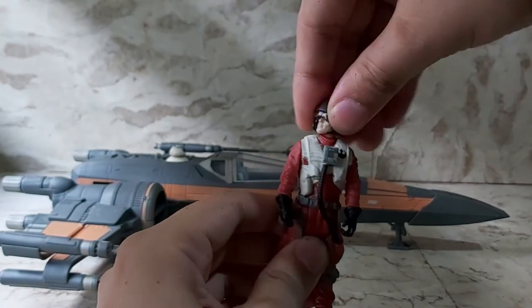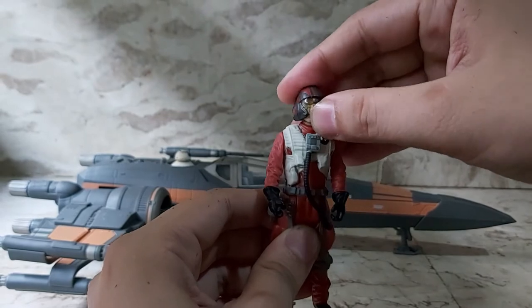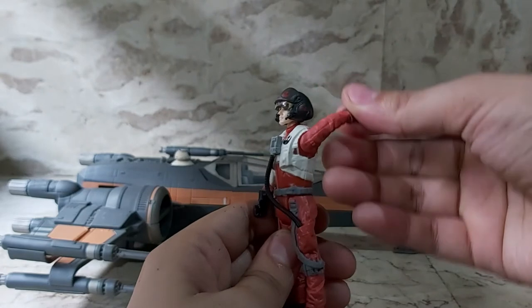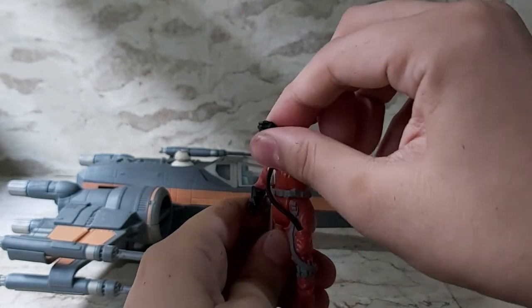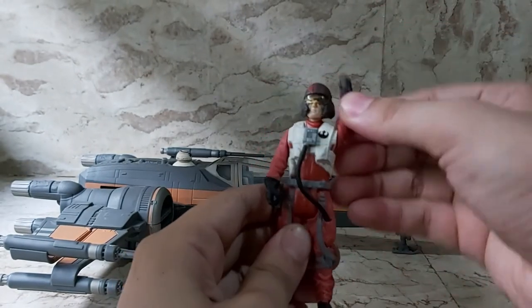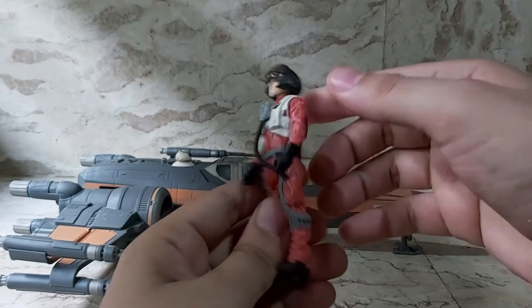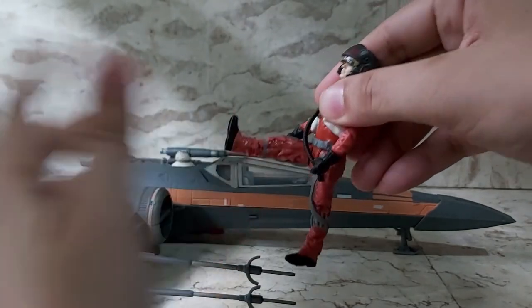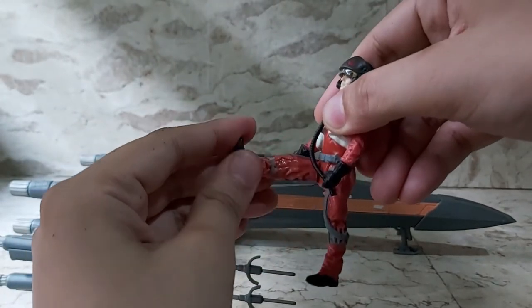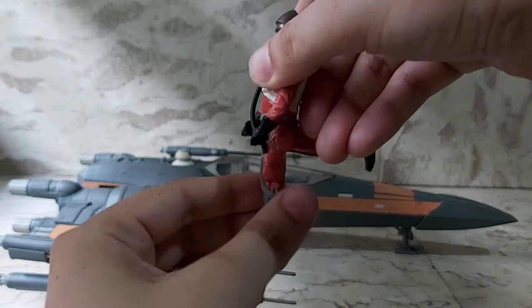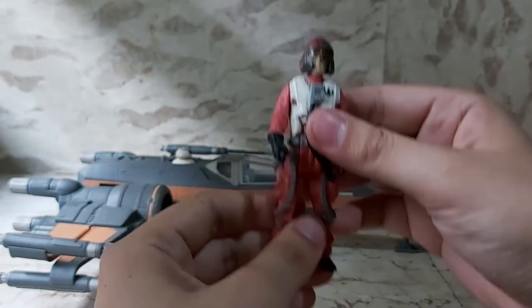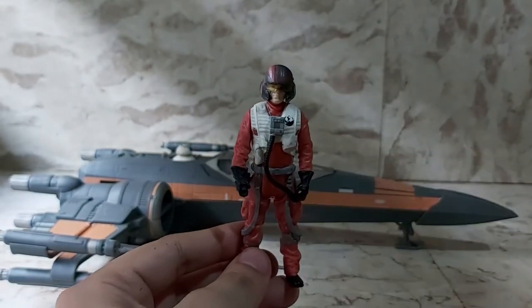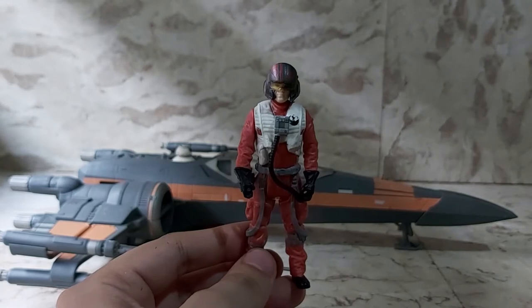When it comes to articulation, his head's in a ball and socket so he can turn it all around and go up and down. He has no articulation on his body. His arms can do the whole turn all around, but that's it. No elbow articulation. His legs go all the way up front like that. It has no knee bend, just goes all the way up and back. That's the only points of articulation this figure has. It's enough for him to sit inside his X-wing.